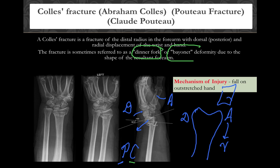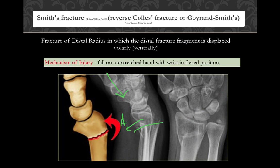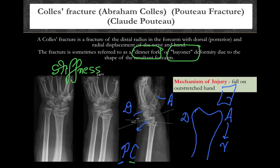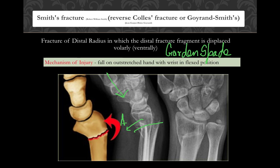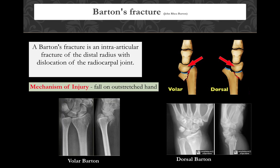Colles fracture leads to the dinner fork or bayonet deformity, but remember the most common complication of a Colles fracture is stiffness — stiffness of the fingers. Smith fracture leads to the garden spade deformity. So: Colles = dinner fork deformity, Smith = garden spade deformity.